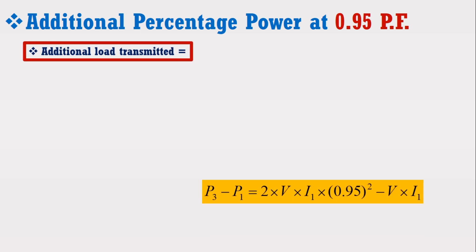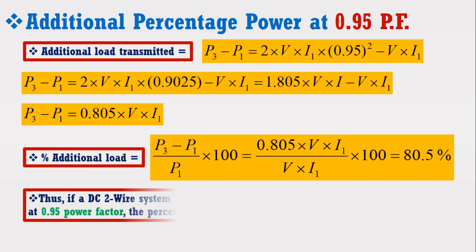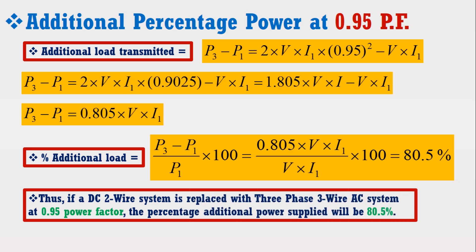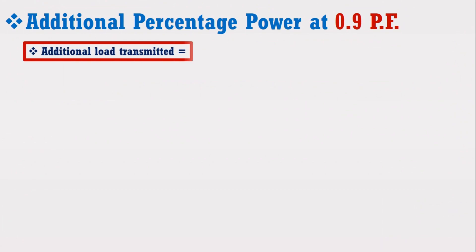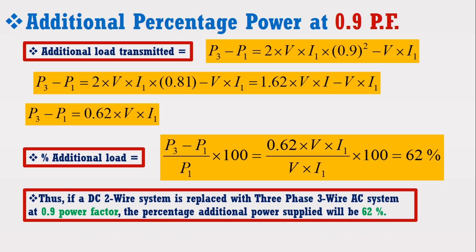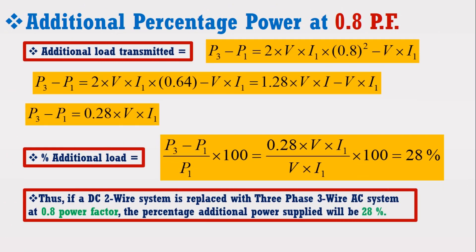Now I am going to calculate percentage additional power at 0.95 power factor. By putting the power factor value in the expression, it is observed that when a DC 2-wire system is replaced with a 3-phase 3-wire AC system at 0.95 power factor, the percentage additional power supplied will be 80.5%. Similarly, the percentage additional power supplied at 0.9 power factor will be 62%, and at 0.85 power factor will be 44.5%, whereas at 0.8 power factor, this percentage additional power supplied will be 28% only.